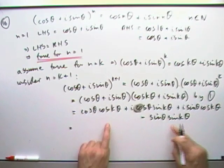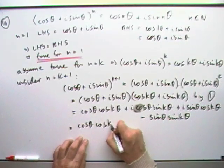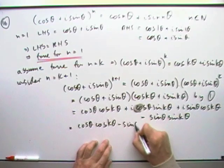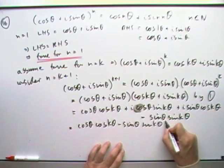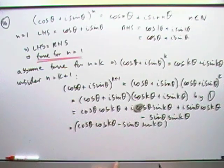That's various terms, put the real parts together. If you put the real parts together, notice what you've got, cos θ cos kθ minus sine θ sine kθ, that forms a pattern as you know, cos cos minus sine sine.